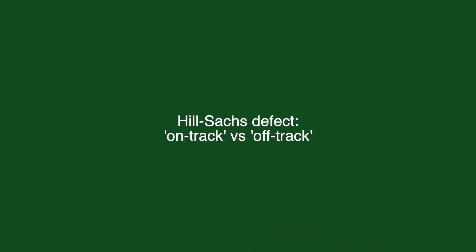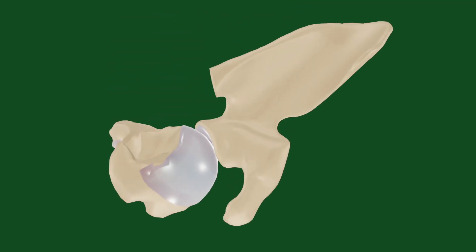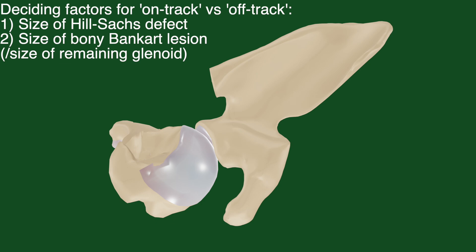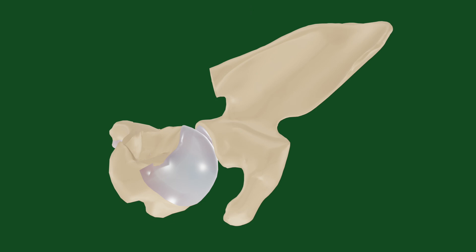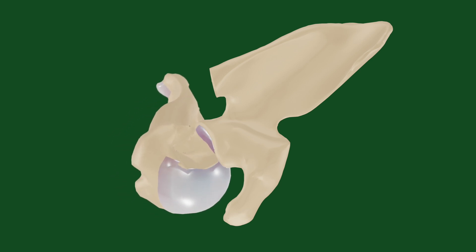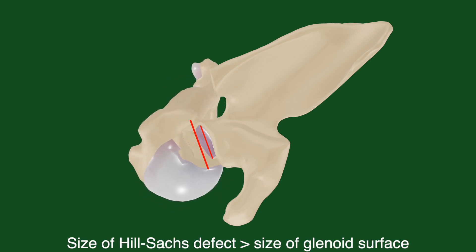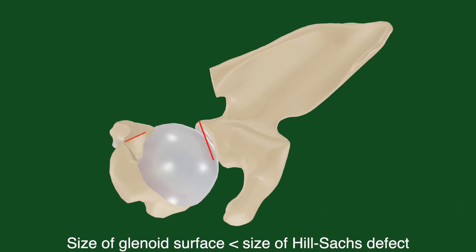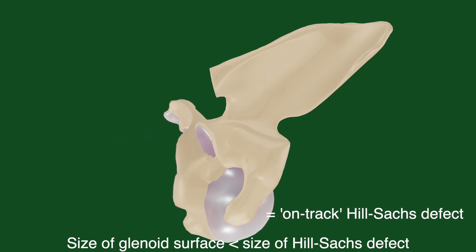Finally, I will describe the concepts of on-track and off-track Hill-Sachs defects. The differentiation between these two types depends on the size of the Hill-Sachs defect itself as well as the presence of any large bony Bankart lesion. In the case where both lesions are large, another recurring episode of shoulder dislocation can cause the remaining part of the glenoid to be trapped — more professionally described as engaged — within the Hill-Sachs defect of the humerus. Under this circumstance, the Hill-Sachs defect is described as being off-track. On the other hand, when the remaining glenoid is larger than the size of the Hill-Sachs defect, this prevents the Hill-Sachs defect from engaging on the glenoid, which is described as an on-track Hill-Sachs defect.